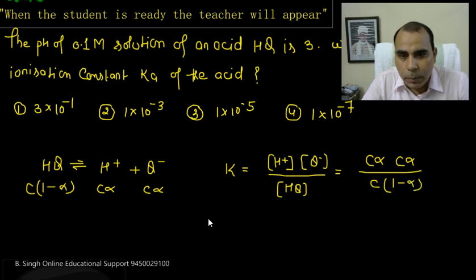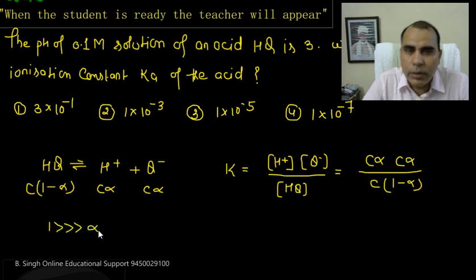Now we have mentioned that in Ostwald's Dilution Law, which is for dilute concentration solutions, if the solution is dilute or moderate concentration, then the value of alpha is small. When we neglect alpha, then 1 minus alpha is approximately equal to 1. In this situation, the formula will be Ka equals c alpha squared.